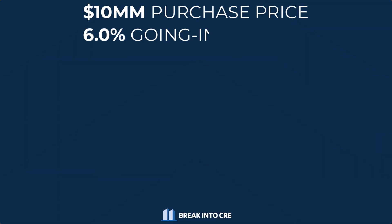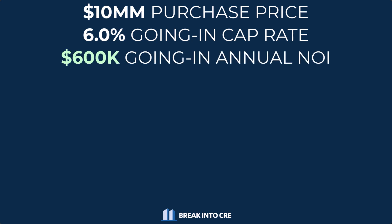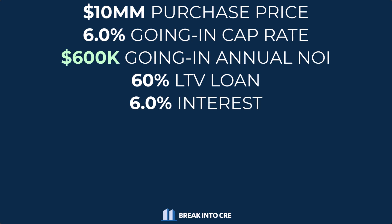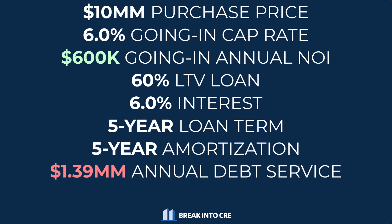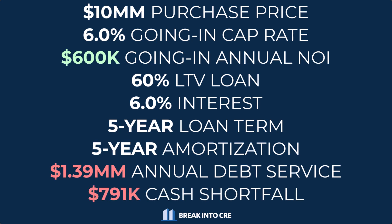To use an example, if we look at a property acquired for $10 million at a 6% cap rate, we generate $600,000 of net operating income in year one. But if this property is financed with a 60% LTV loan at a 6% interest rate with a loan term of five years and an amortization period that's also five years, our annual debt service requirements would be almost $1.4 million. This means the NOI the property generates wouldn't come close to covering these costs, and investors would need to come out of pocket with the remaining $791,000 per year required just to service the debt. In this scenario, it wouldn't make sense for investors to borrow, and it also wouldn't make sense for a lender to lend.